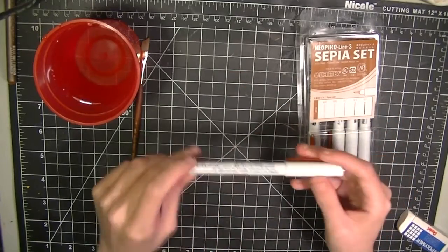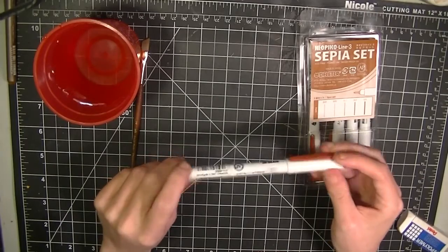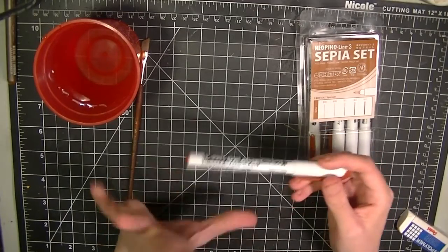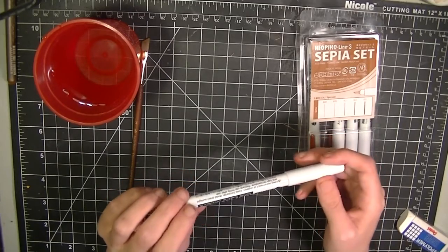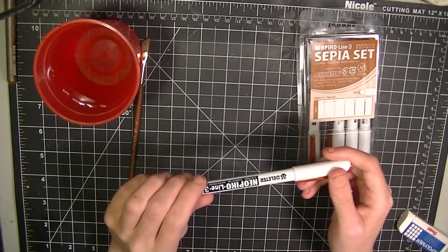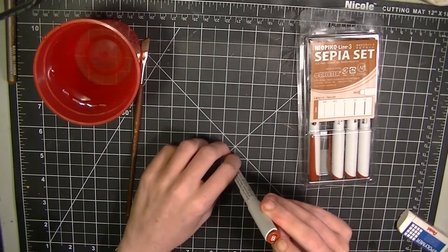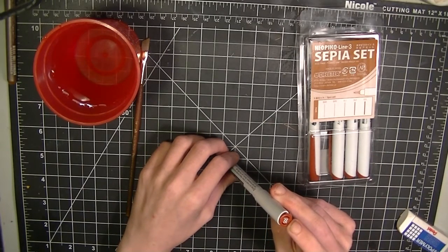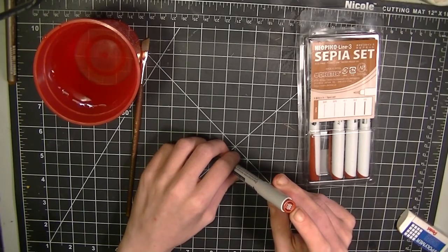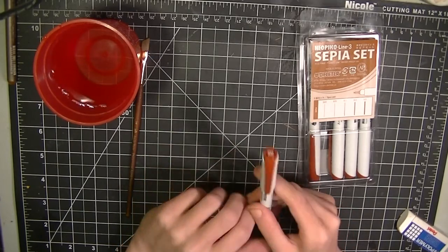One thing I don't like about these pens though, or at least the outside of the pen, is that they don't have the nib size written on the actual pen itself. So, if this fades, though I doubt it, it may be a bit of a pain trying to deal with.